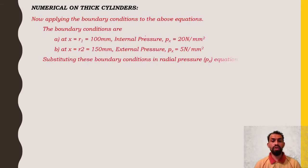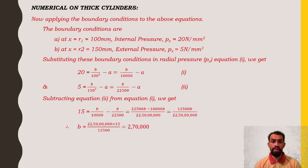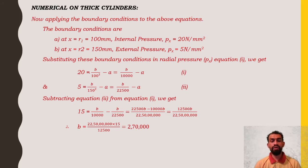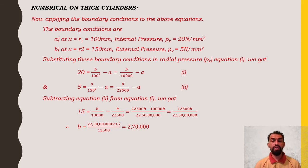Applying boundary conditions: at x = r1 = 100 mm, px = 20 N/mm²; at x = r2 = 150 mm, px = 5 N/mm². Substituting into the radial pressure equation: 20 = B/100² − A (equation 1) and 5 = B/150² − A (equation 2). Subtracting equation 2 from equation 1: 15 = B/10,000 − B/22,500. Simplifying, B = 270,000.